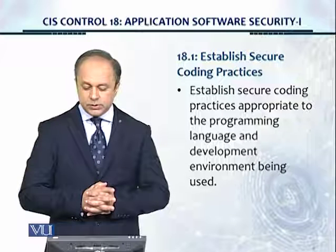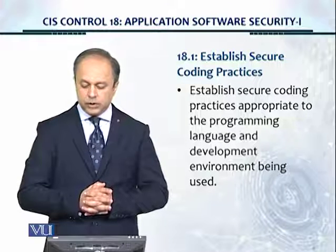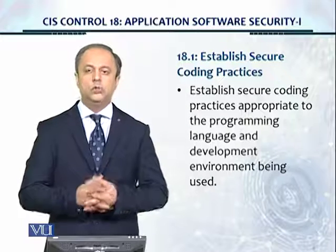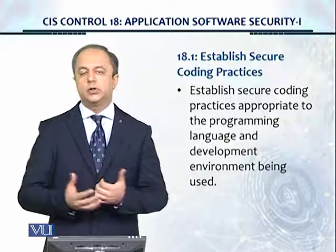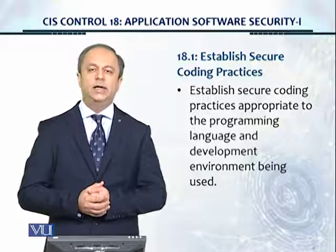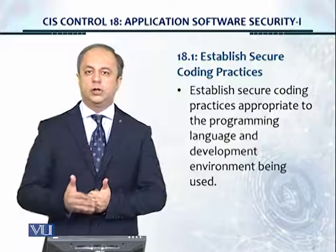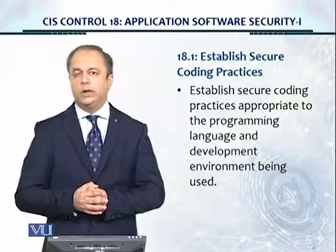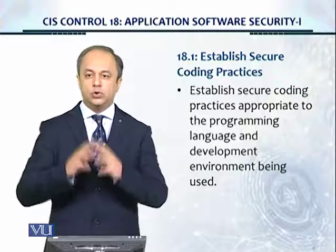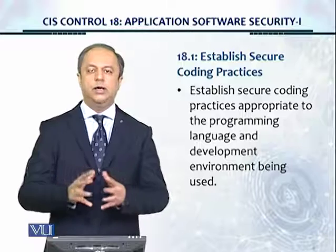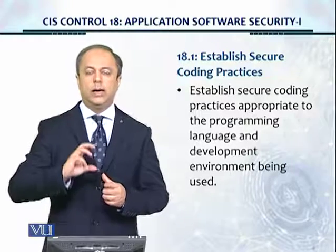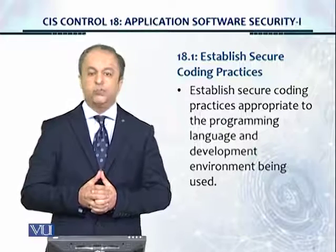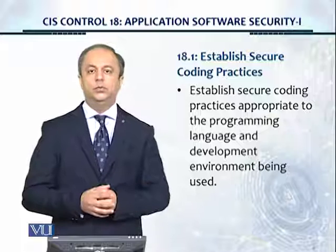To establish secure coding practices, we need to establish secure coding practices appropriate to the programming language and development environment being used. We need to pick up a control set. For example, the Software Engineering Institute (SEI) of Carnegie Mellon Institute has a lot of great control sets for Java, C++, C, and Perl. They have these control sets for secure coding practices, with examples of insecure code and secure code and how to secure the code properly. We need to find that control set, which will form the coding standard we're going to follow.